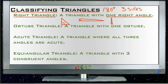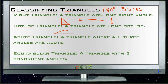An obtuse triangle is a triangle where that third angle is greater than 90 degrees. An obtuse triangle will always have two very small acute angles — smaller and smaller depending on how obtuse the other angle is. The one angle opposite the longest side will be greater than 90 degrees, and that's what makes it an obtuse triangle.